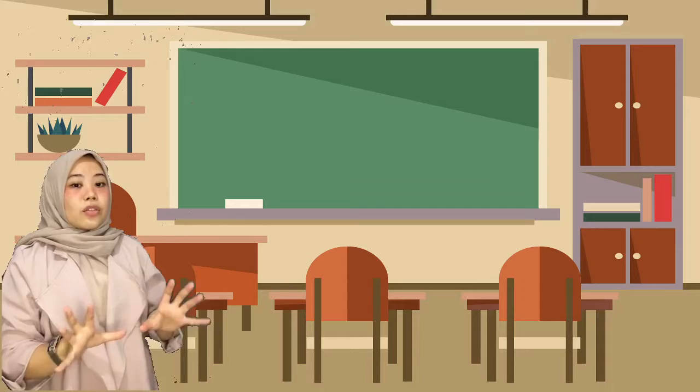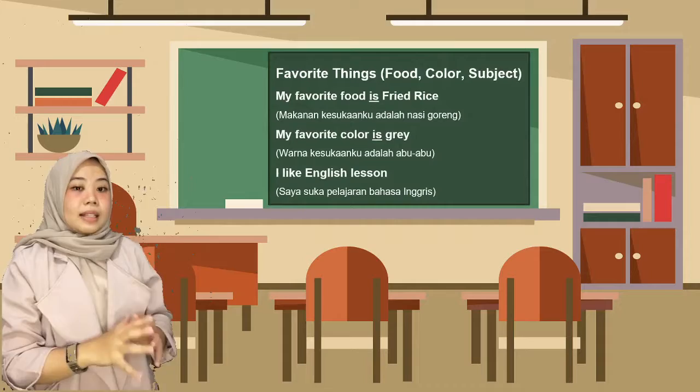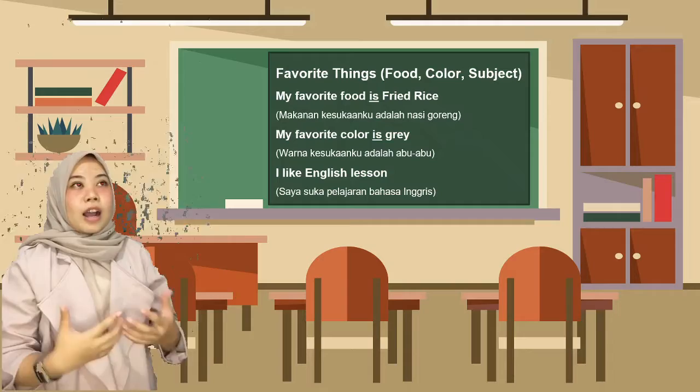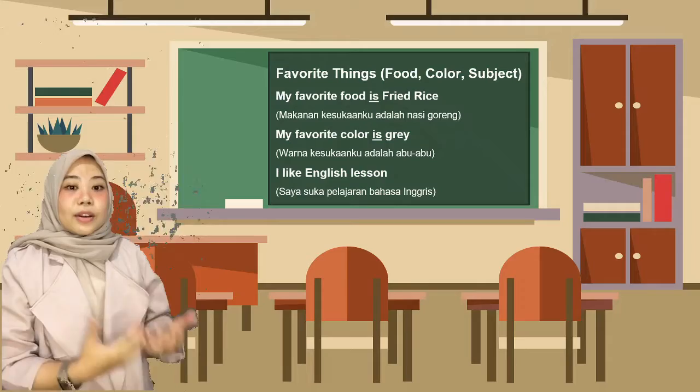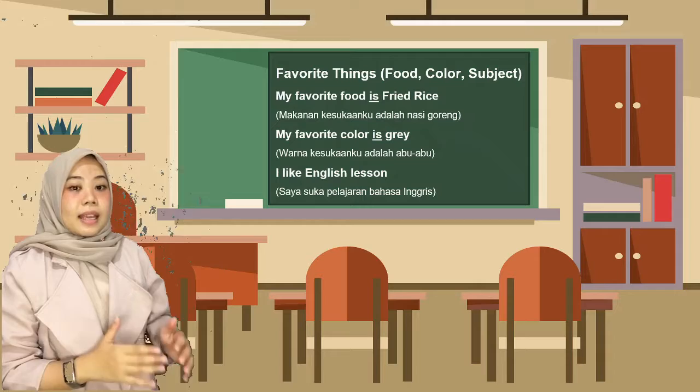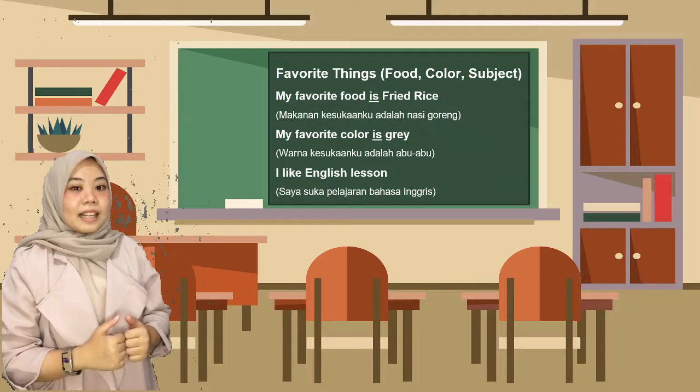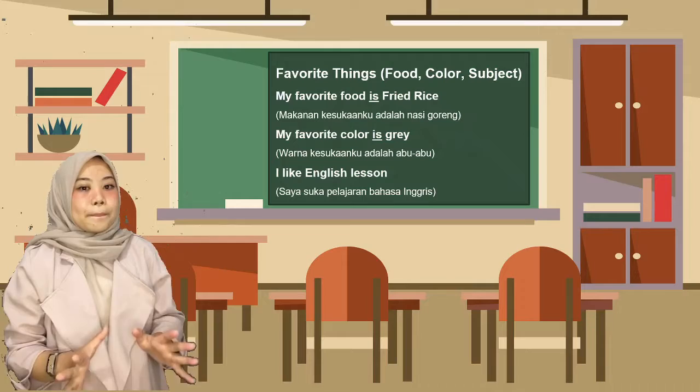The last information you can share to your new friends is about your favorite things. In English, you can say 'My favorite food is fried rice,' 'My favorite color is grey,' or 'My favorite subject is English lesson.' Ini optional — kalian bisa membagi informasi apa saja yang kalian ingin bagi kepada mereka.